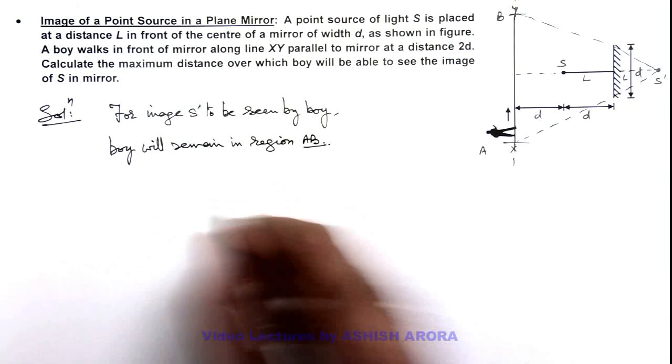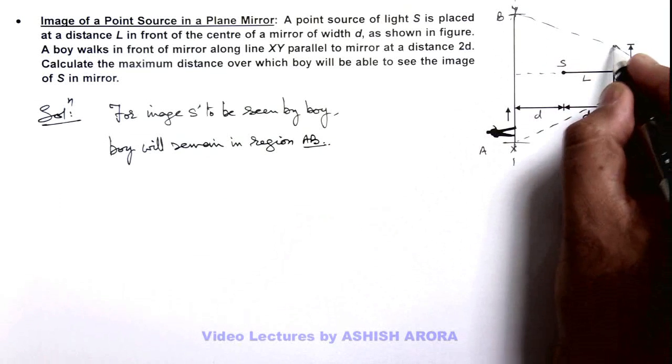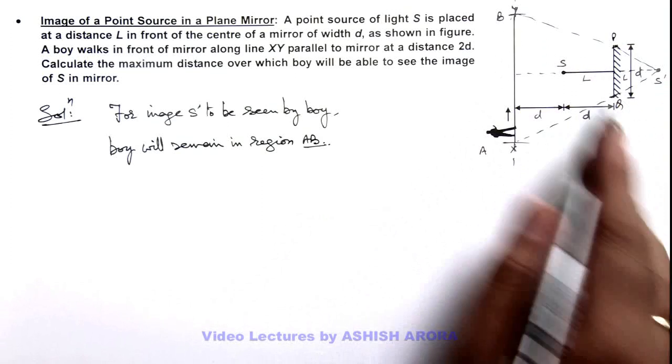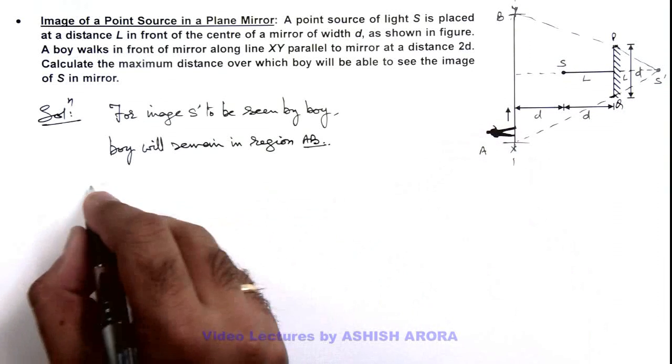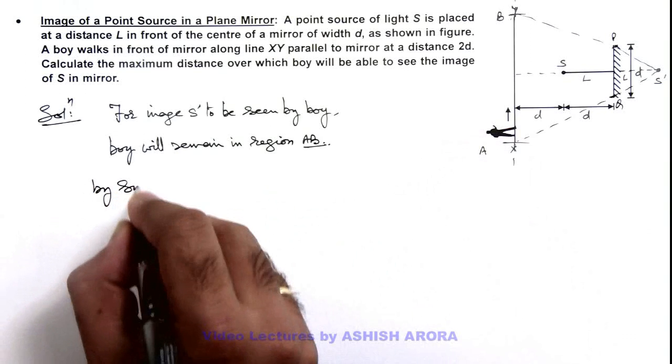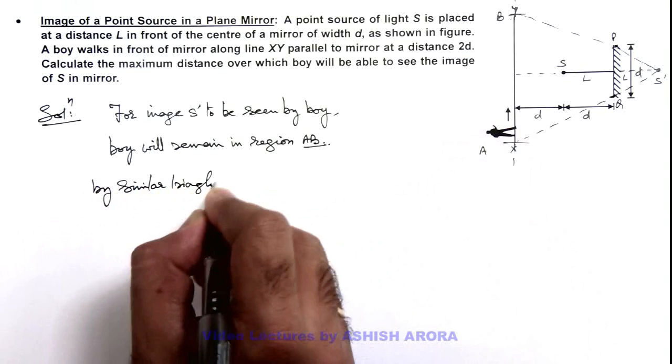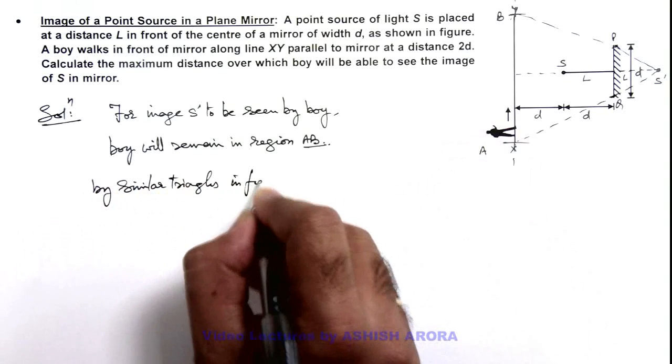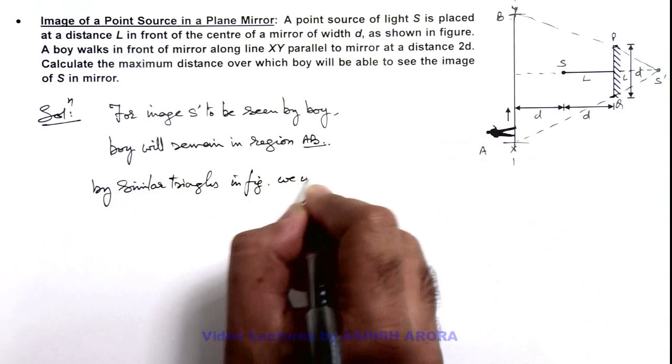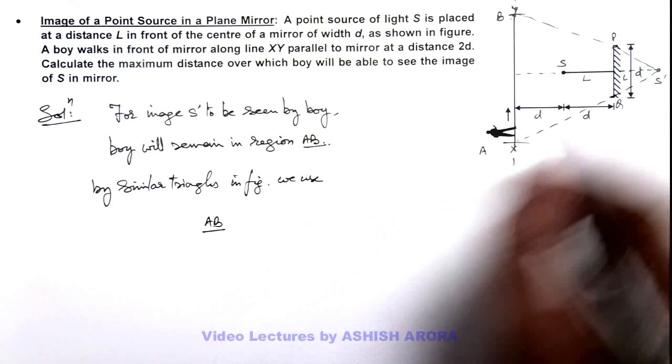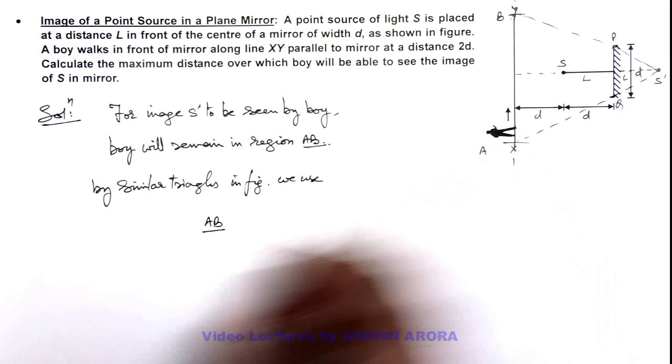So if this is AB here, this mirror can be written as PQ. If we use the similarity here, we can use similar triangles in figure. We use here, you can write this length is AB divided by the altitude of this bigger triangle, which is 3d.